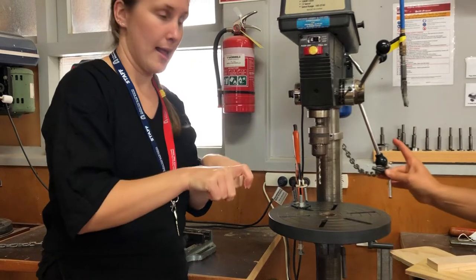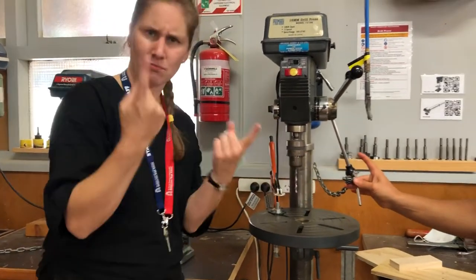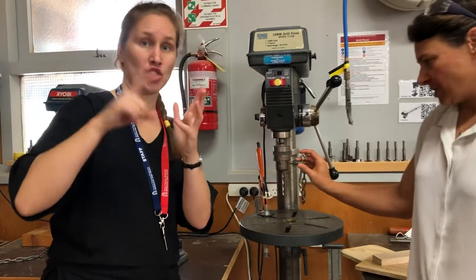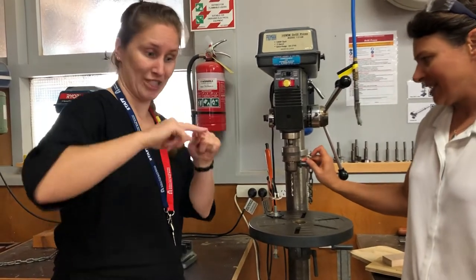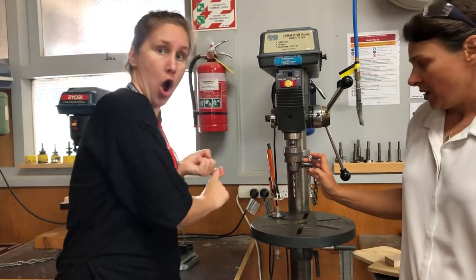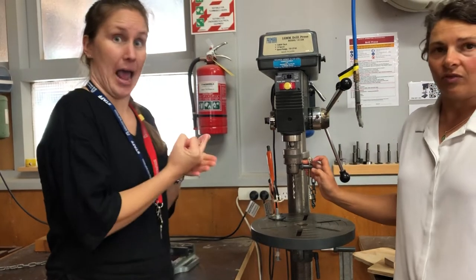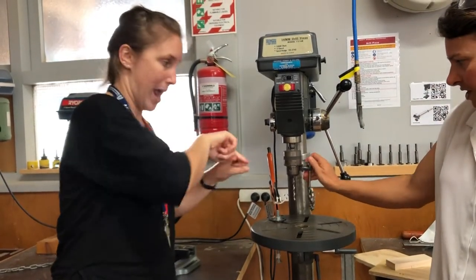Then I reach around and I get the chuck key. All of our chuck keys are chained on. It's important that we do that so that if you accidentally leave it in the machine, it's not going to go flying around the room. But you're going to put the chuck key in the side,